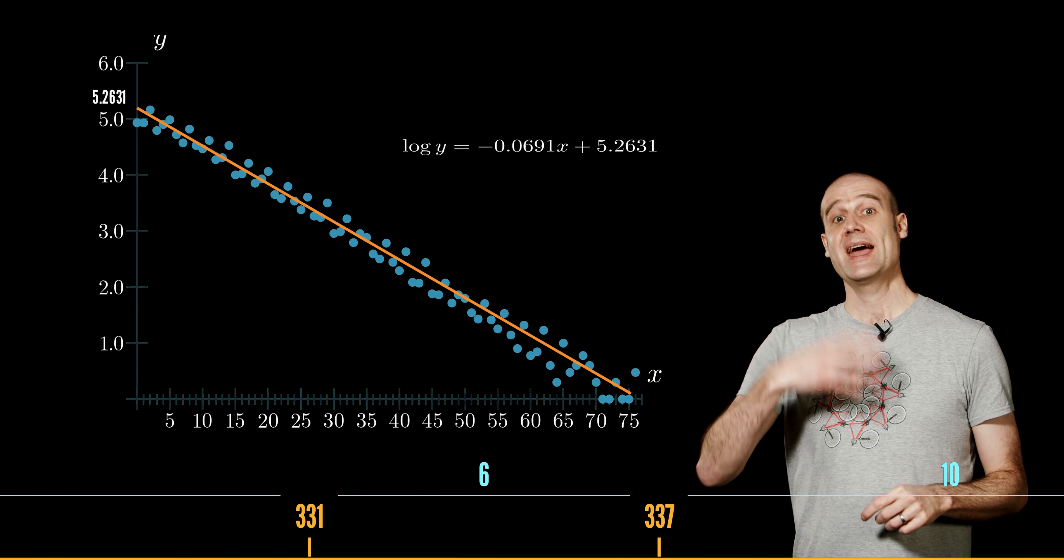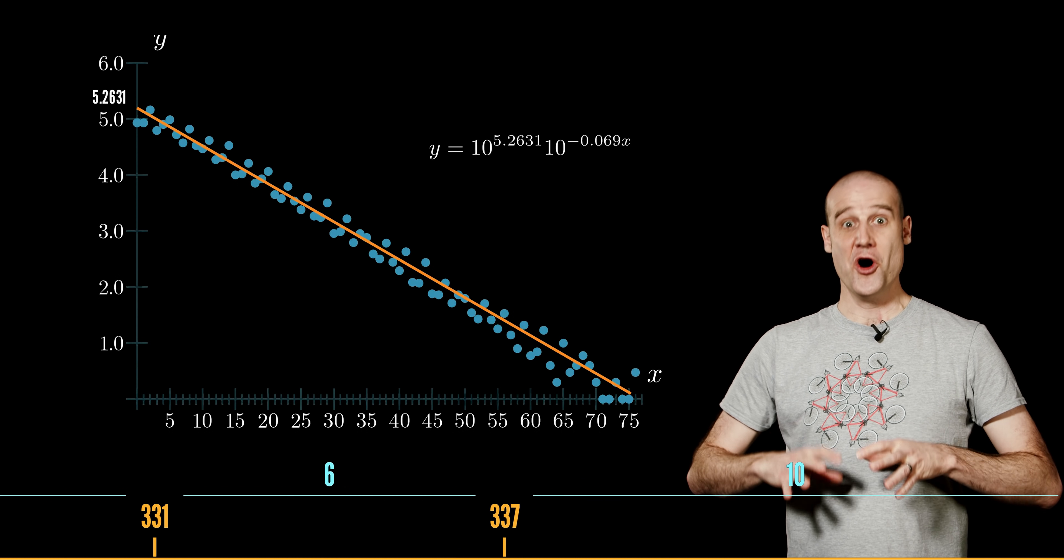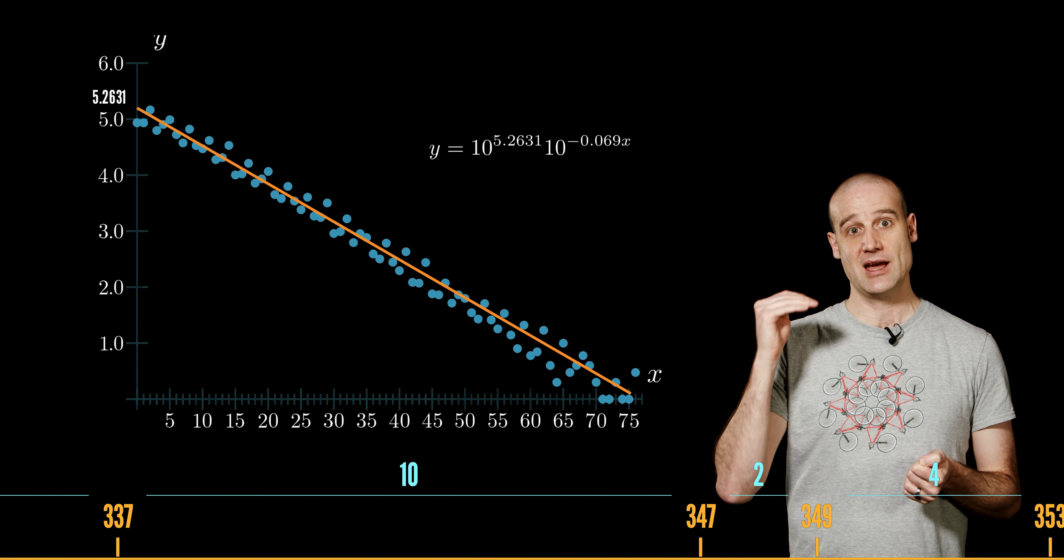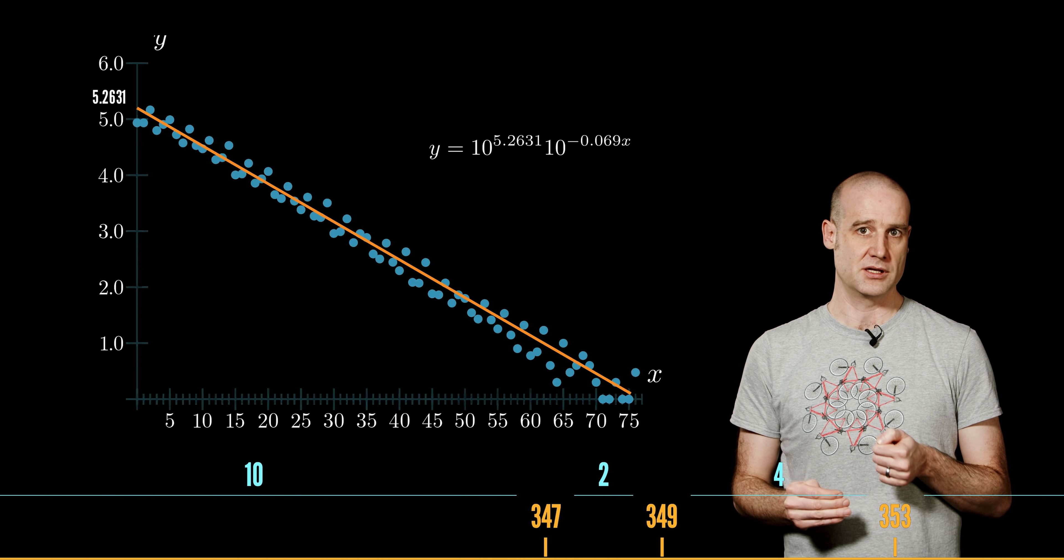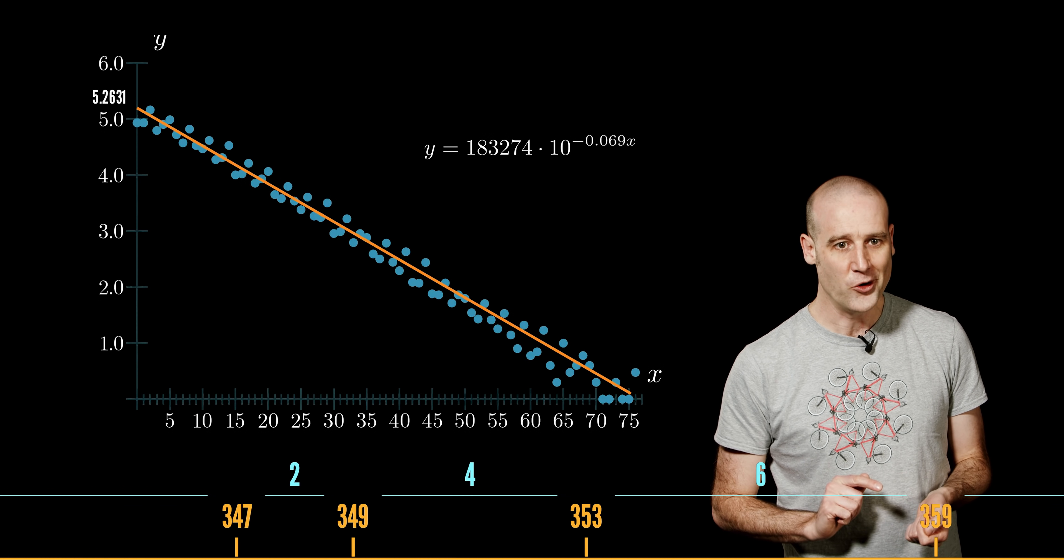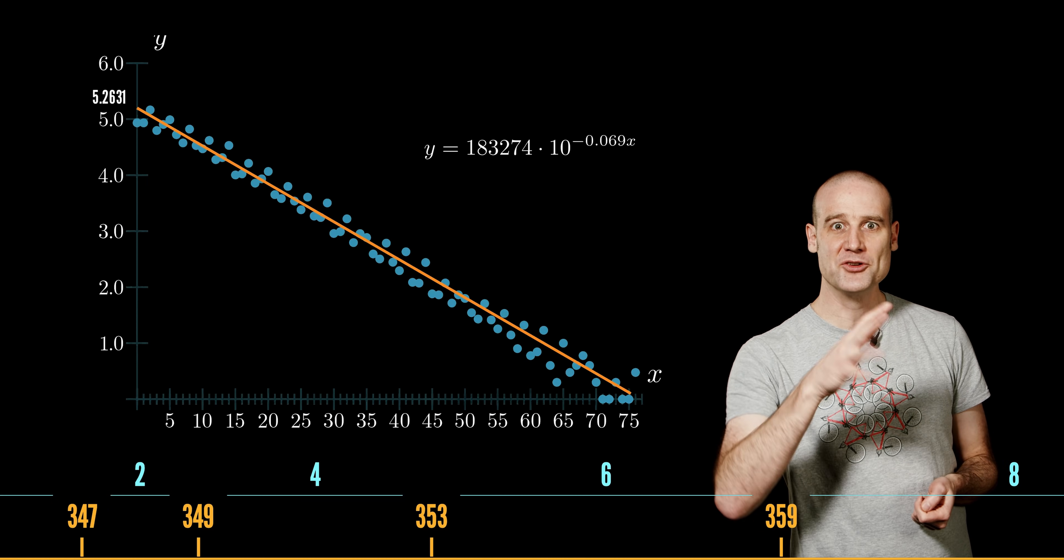We can turn it back into the original non-logarithmic plot with a little bit of rearranging. The intercept is now 10 to the power of 5.2631, which is 183,274. I've written that down over there. Give or take. It's approximate.